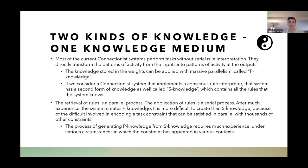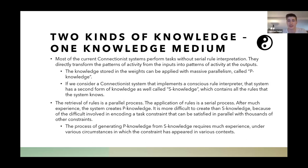When you think about two different kinds of systems, there are two different kinds of knowledge in one knowledge medium. Knowledge applied in the weights can be applied with massive parallelism — called P-knowledge. If a connectionist system implements a conscious rule interpreter, there is a second form of knowledge called S-knowledge: all the rules the system has memorized. The retrieval of rules is a parallel process stored in P-knowledge, the rules are instantiated in parallel, and then the application of the rule is a serial process. After much experience, the system can generate more P-knowledge while applying rules in various contexts.